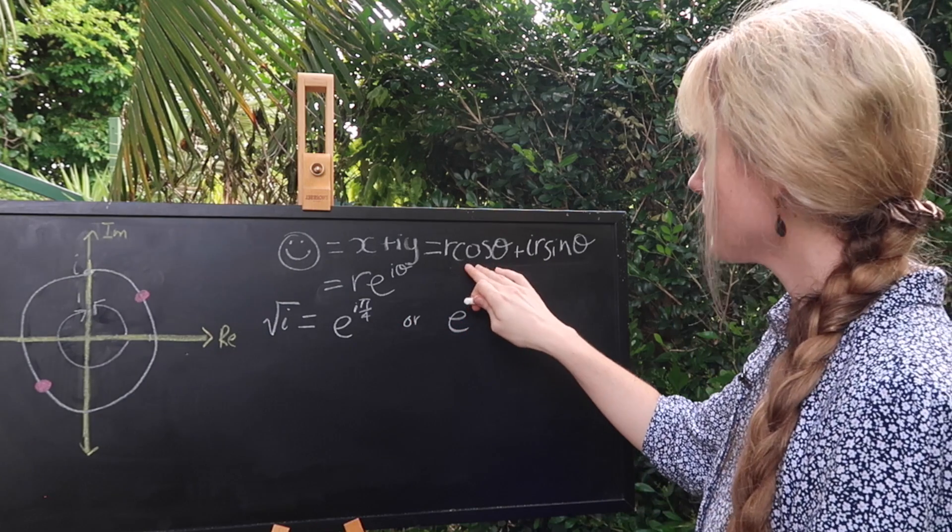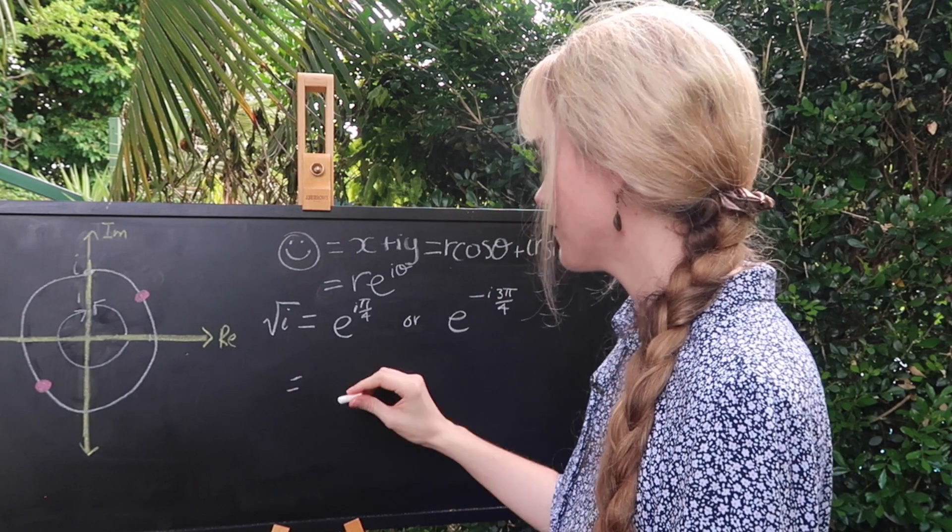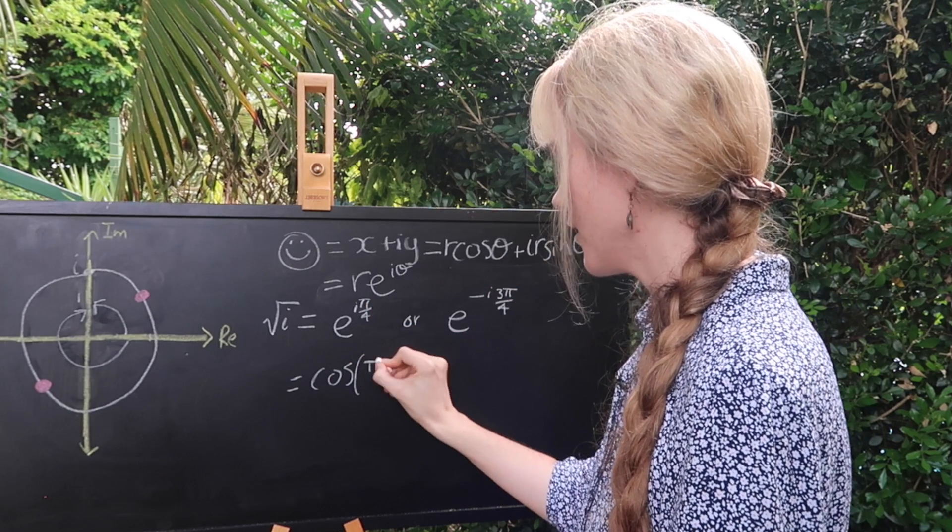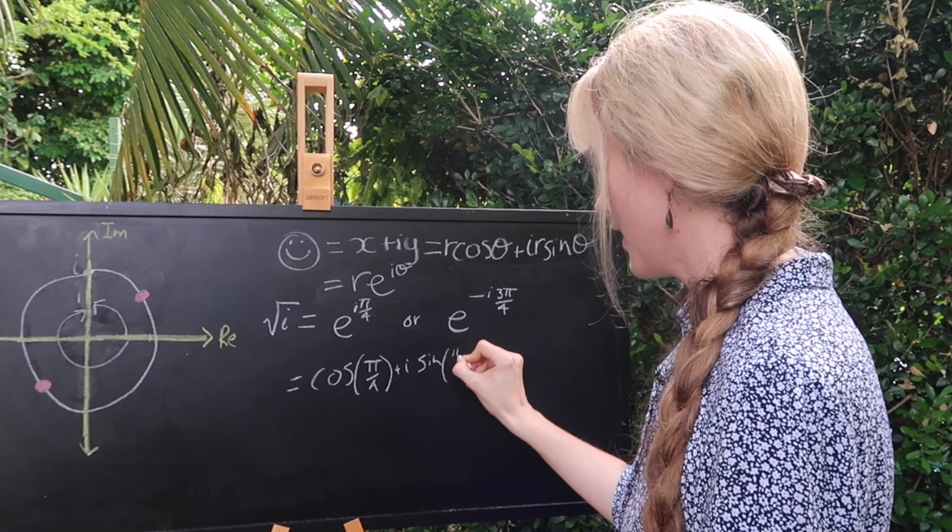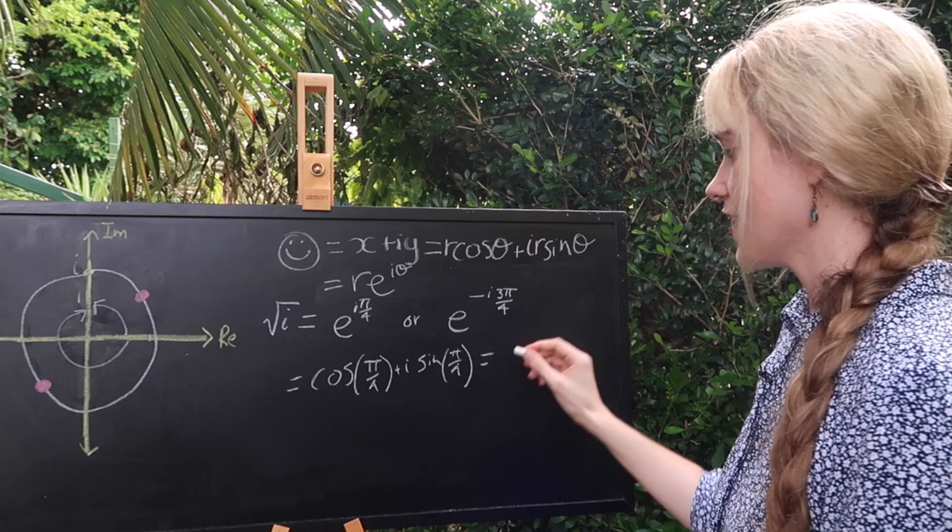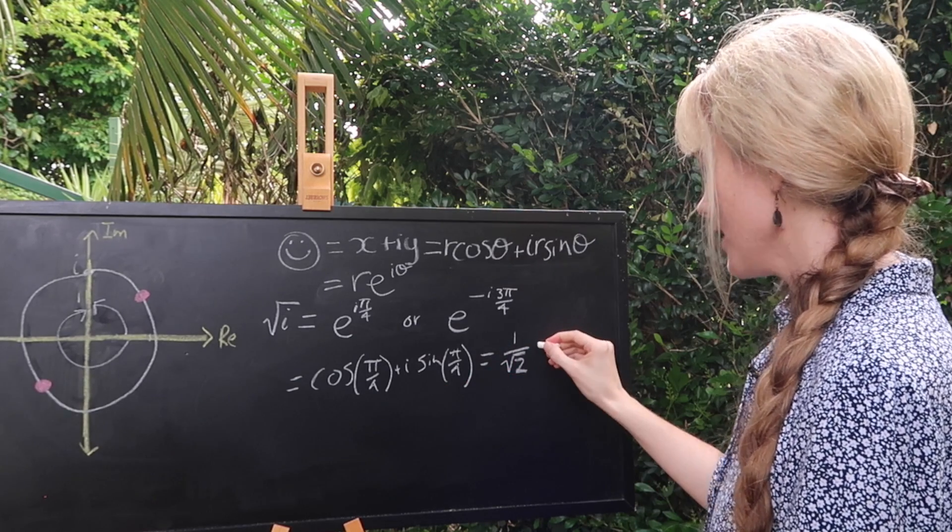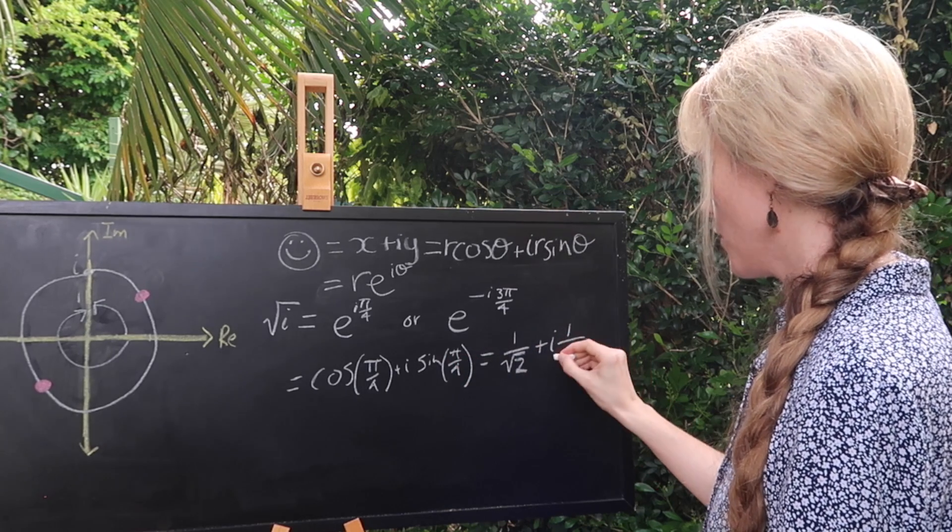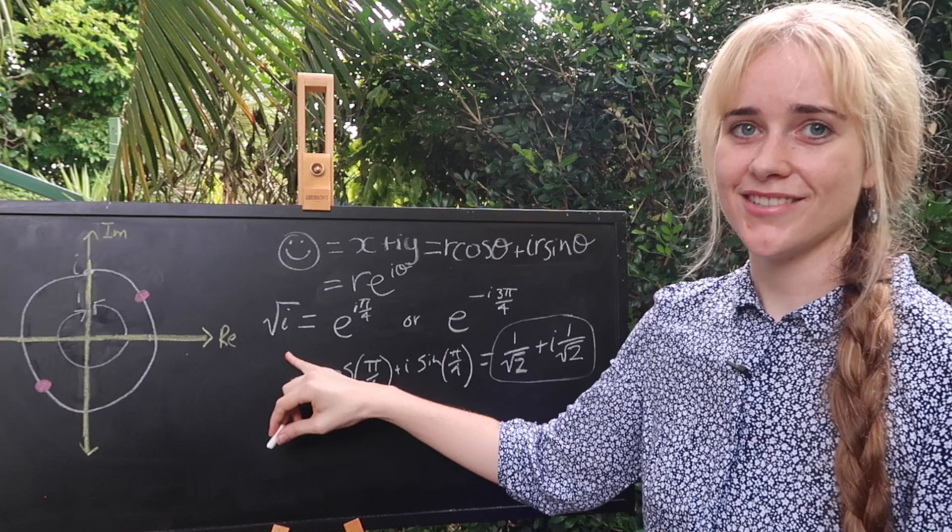If you choose to convert them back into the original form we just do that using the reverse of Euler's formula so putting them back into sine and cosine. For our first solution we would have theta as pi over four so we would have cosine pi over four plus i sine pi over four. Now cosine of pi over four actually works out to one over root two and in a similar way we would have plus i times the sine of that which is also one over root two. So that is actually our first solution to the square root of i.